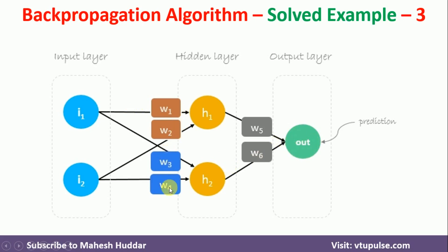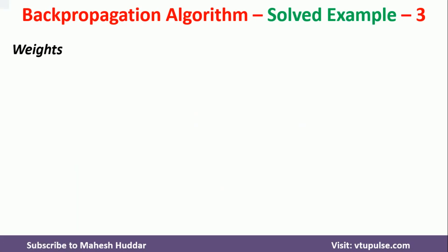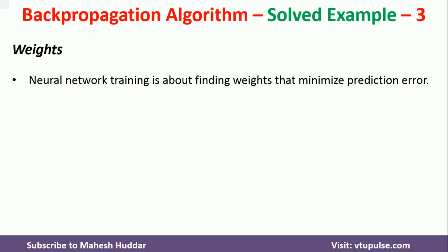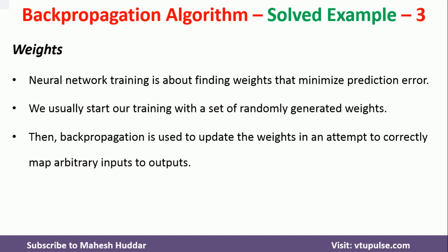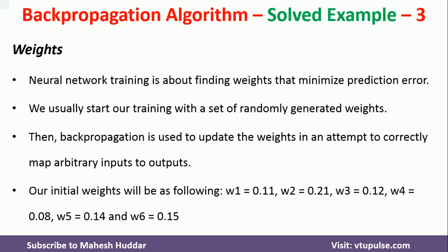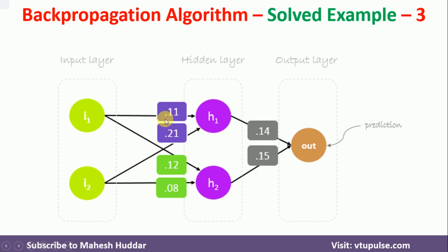W1, W2, W3, W4 are the hidden layer weights. W5 and W6 are the output layer weights. Neural network training is about finding the weights so that we can find the output with a minimum error. First, we will assign some random weights to the neural network, then update these weights with respect to the back propagation algorithm to get the minimum error at the output layer. The initial weights are: W1 is 0.11, W2 is 0.21, and so on — 0.12 and 0.08 are the hidden layer weights, while 0.14 and 0.15 are the output layer weights.